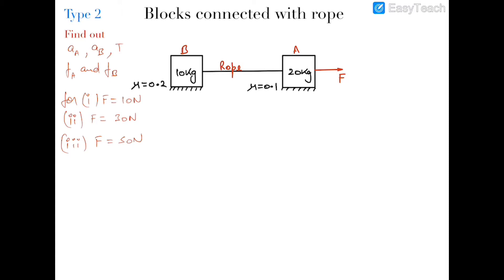First, we write down the maximum values of friction for both blocks. F_A max will be 20 newtons and F_B max will also be 20 newtons.